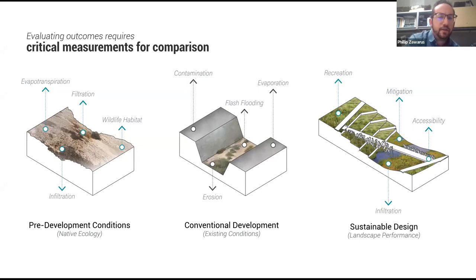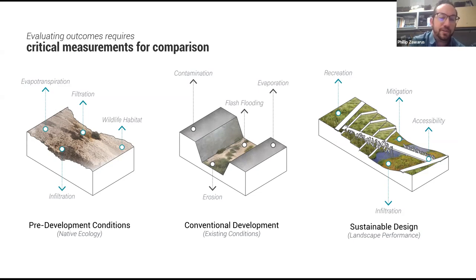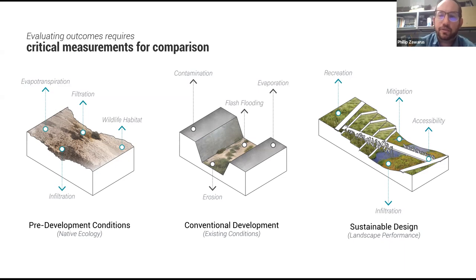One of the best ways to evaluate and assess design is to take your existing conditions and think about how the site was before — the pre-development native ecology — and then ask what is your design actually doing? When you not only cross-reference data with project goals but also look at how the site has evolved versus its conventional and natural condition, you can use those as baseline measurements to determine how it has improved. The main goal is that you're at least improving it from existing conditions, hopefully introducing economic and social benefits alongside environmental ones.